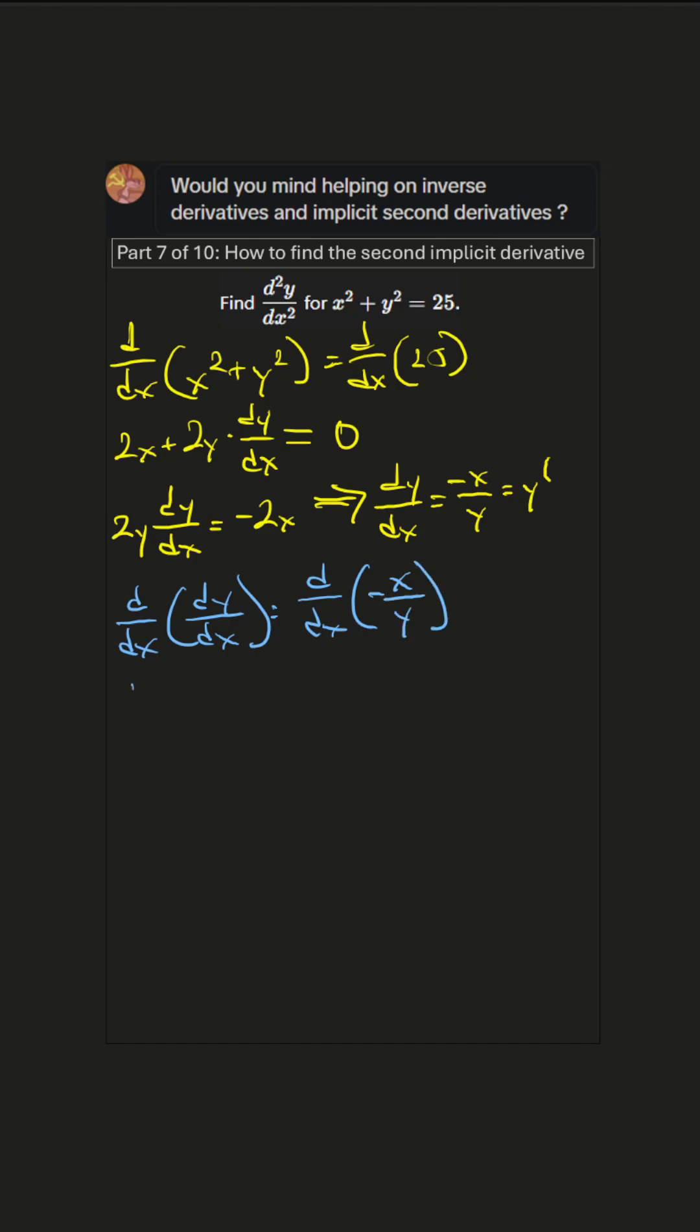On the left hand side we get d²y/dx², that's just the notation for the second derivative of y with respect to x. On the right hand side we have this negative. Let's pull that out front and then we'll use the quotient rule.